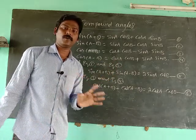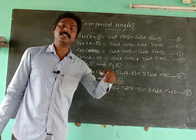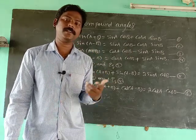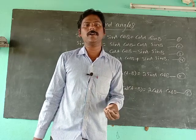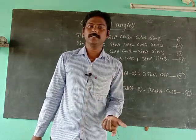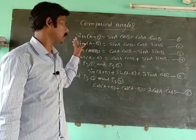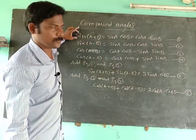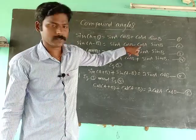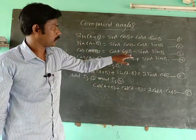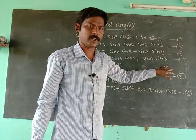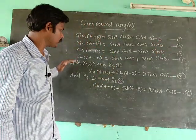Sin(x+y) is the same as sin(a+b) — the variable name doesn't matter, like in algebraic identities where (a+b)² = a² + 2ab + b² is the same as (x+y)² = x² + 2xy + y². Once again: sin(a+b) = sinacosb + cosasinb; sin(a-b) = sinacosb - cosasinb; cos(a+b) = cosacosb - sinasinb; cos(a-b) = cosacosb + sinasinb.